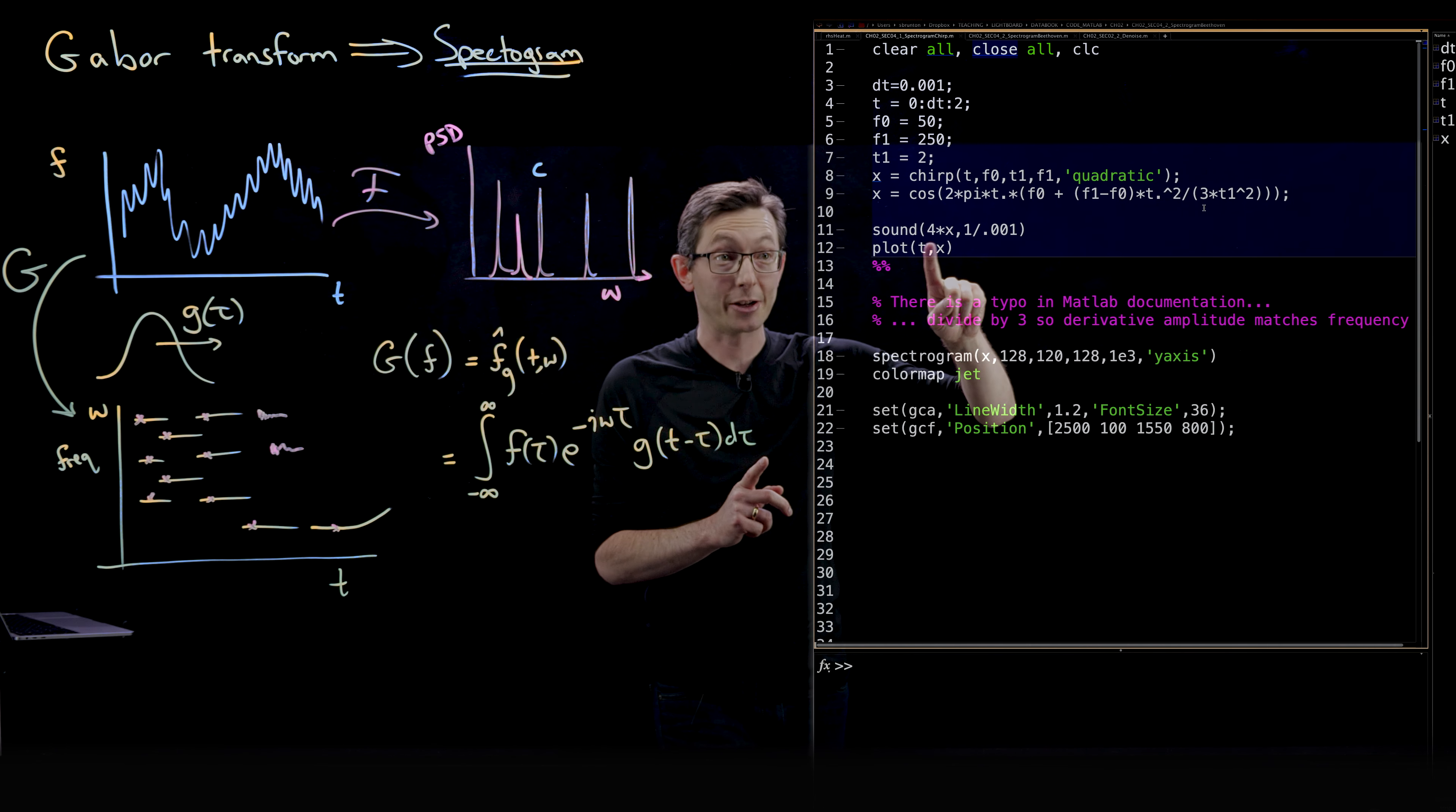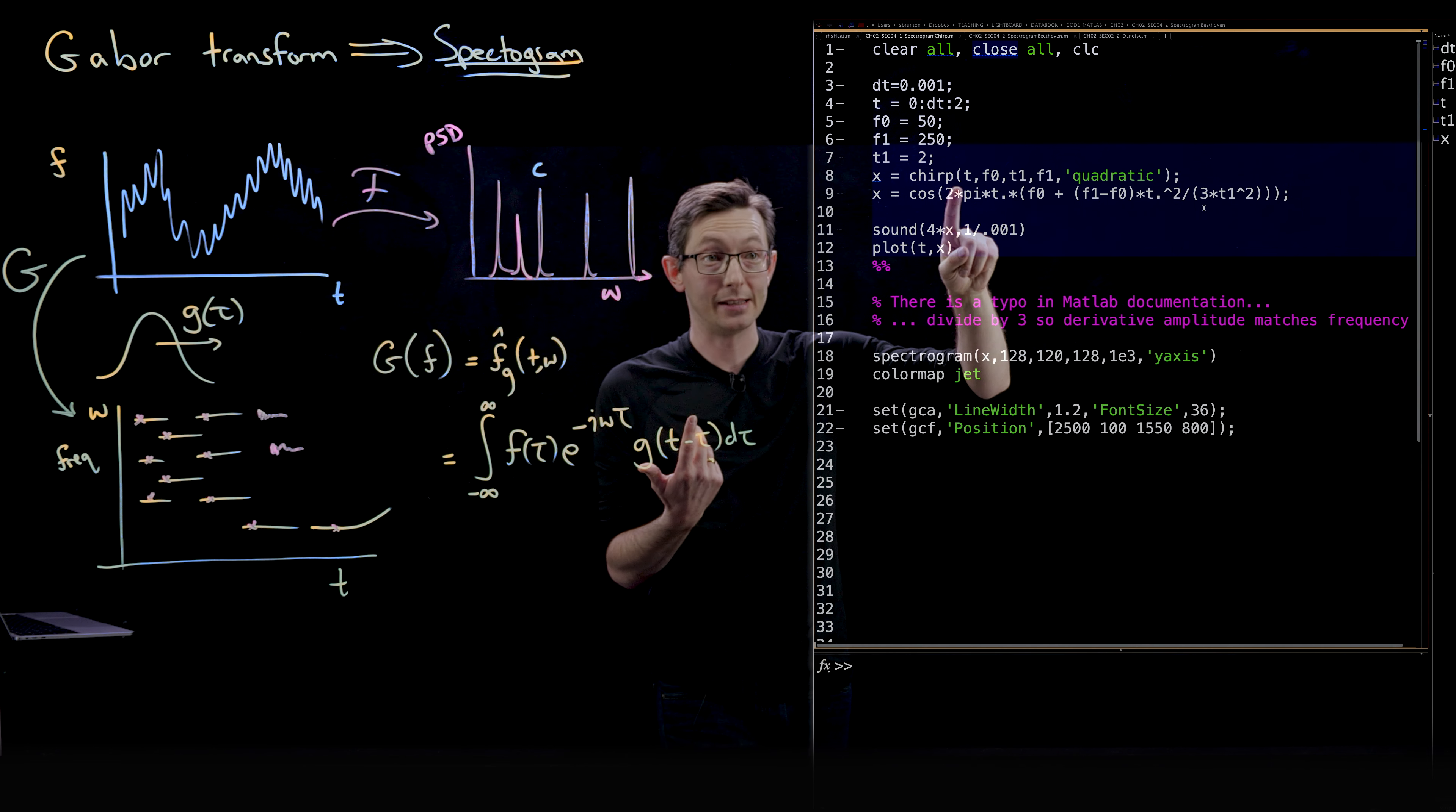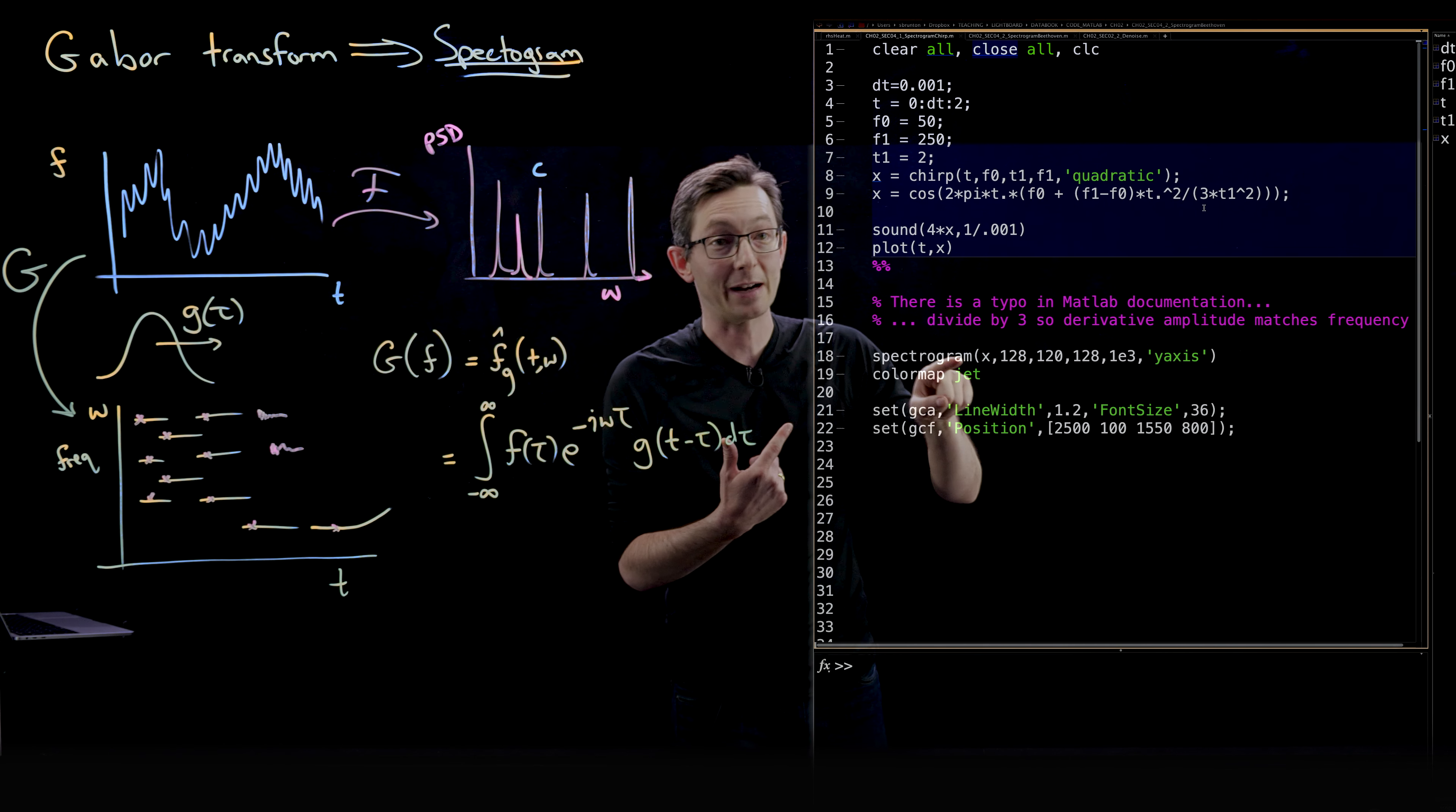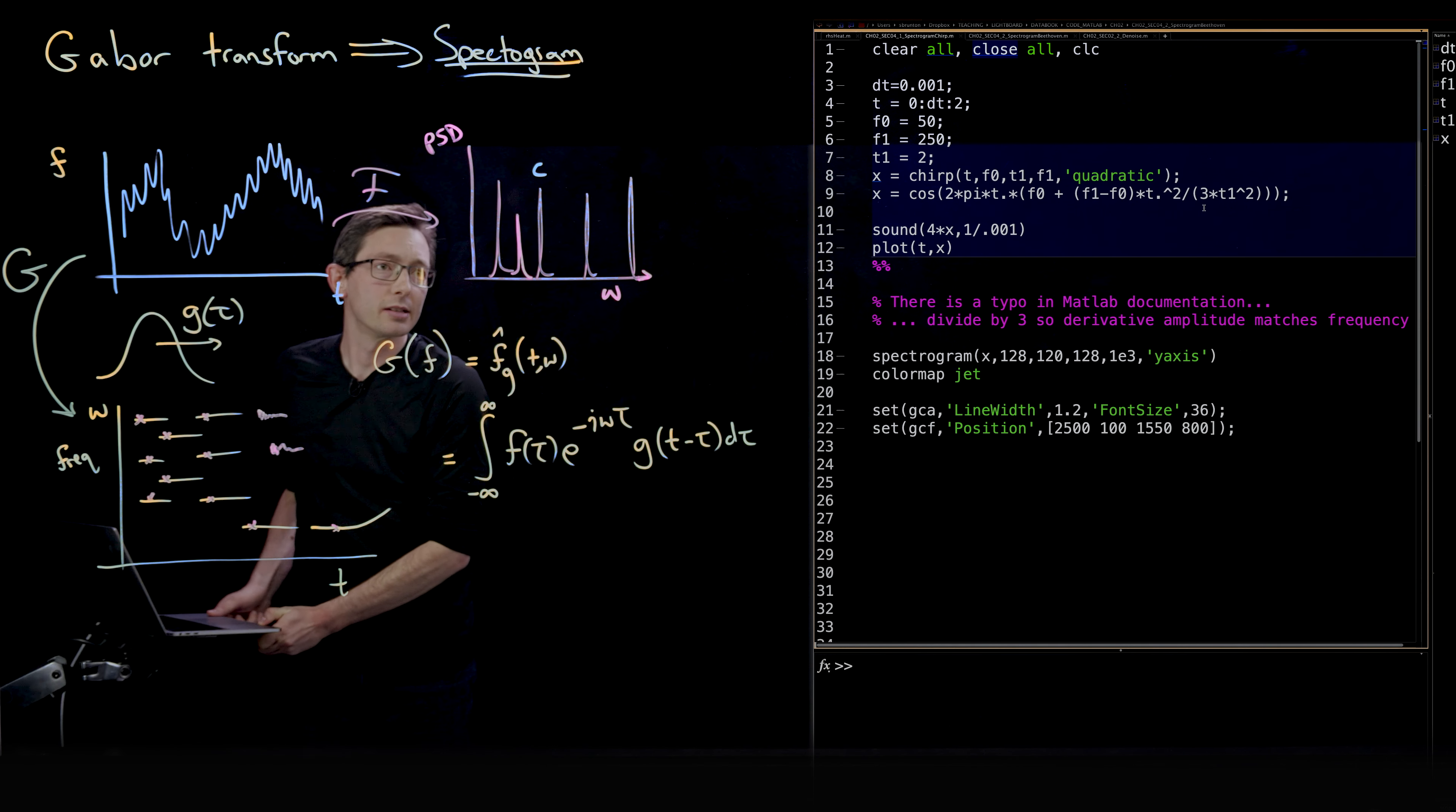What I'm going to do is I'm going to actually play the sound using the sound command and plot the signal just to show you what the chirp looks like. Then we're going to plot the spectrogram using the one-line spectrogram command in MATLAB. Let's start this out.